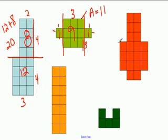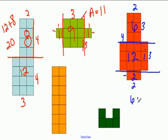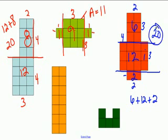For the red shape, we split it into three parts. The top part is two times three, which is six. The middle part is three times four, which is twelve. And the bottom part is one times two, which is two. So six plus twelve plus two equals twenty. This shape's area is twenty as well.